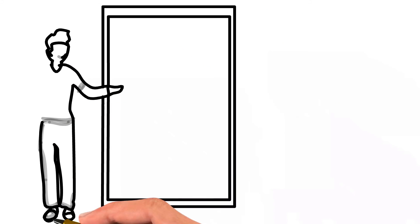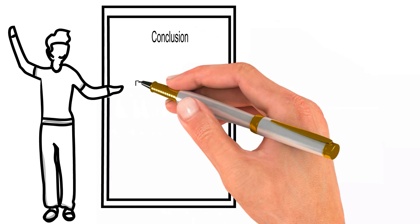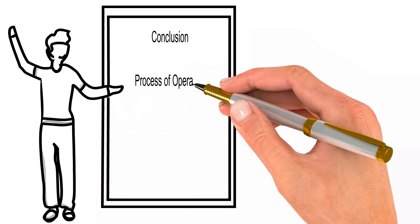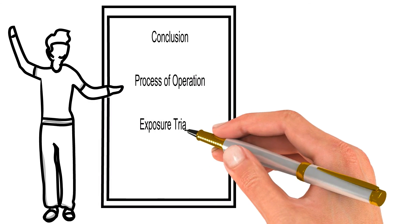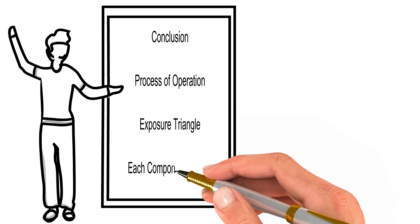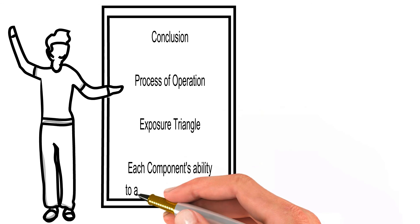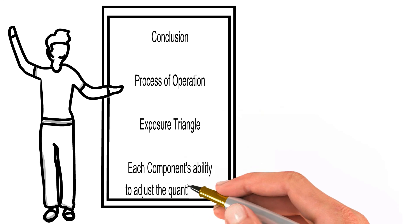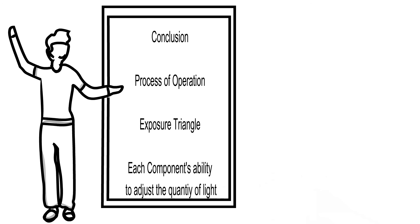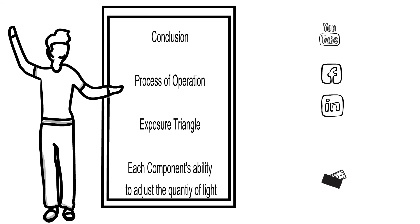Congratulations for completing this first tutorial on how your camera works. By now you should have a simple understanding of the process of operations when creating a digital photograph, the three components of the exposure triangle, and how each component can adjust the quantity of light for your exposure. In the next tutorial we'll talk about the exposure triangle again, this time covering the photographic reasons behind each component and how to measure for the correct exposure. I encourage you to follow my YouTube channel, Facebook page, and Instagram for updates.